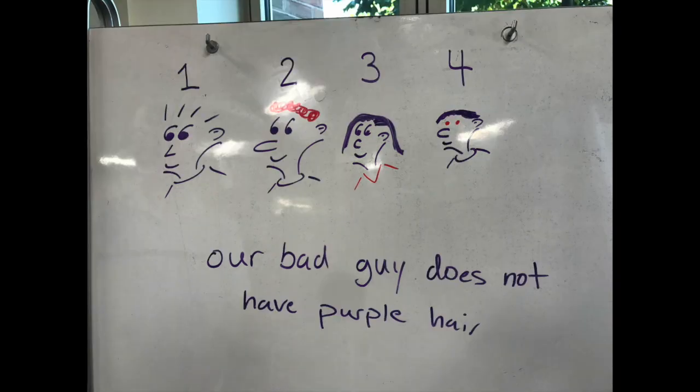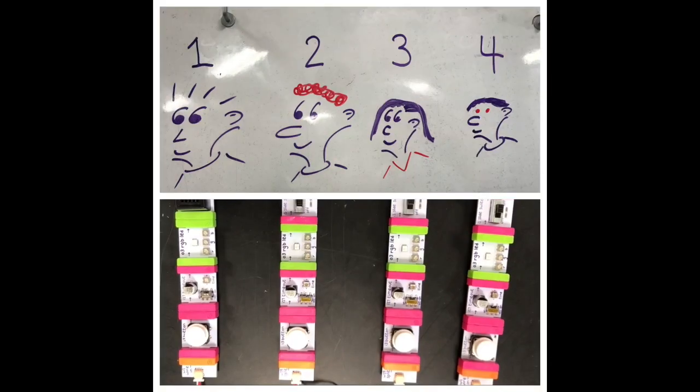When they think they know who it is, they will press the corresponding button. If it is wrong, a red light will display and a buzzer will sound.